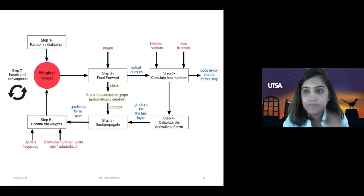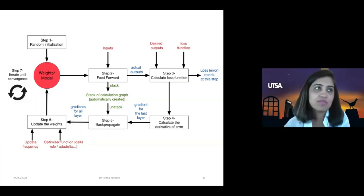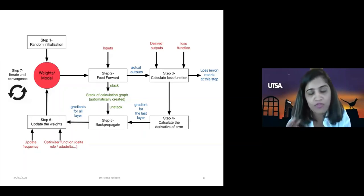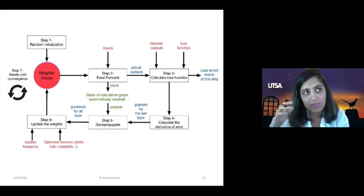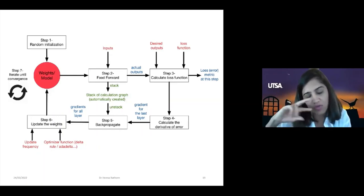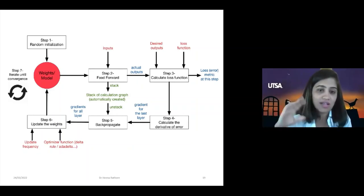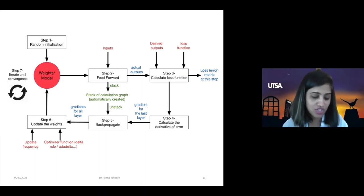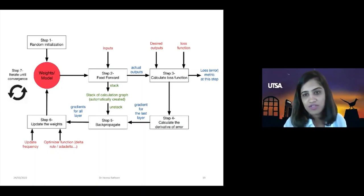Looking at how a neural network is designed: we have inputs introduced with weights and biases, which are forwarded through the network to produce an output. The desired output and actual output are compared using a loss function. We calculate the derivative of the error and back-propagate the learnings to adjust the weights. This basic neural network approach is the foundation from which different deep learning systems are designed.